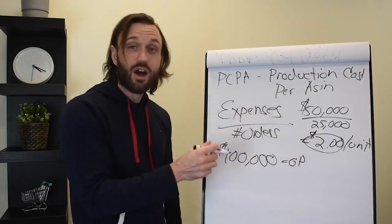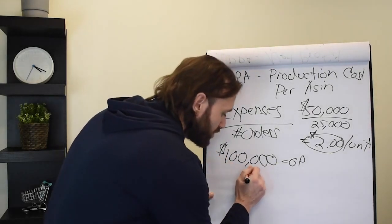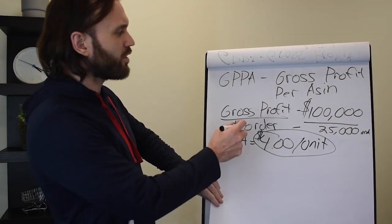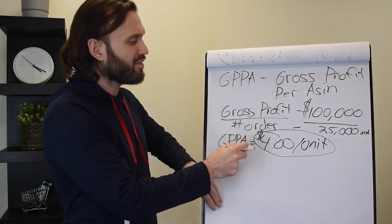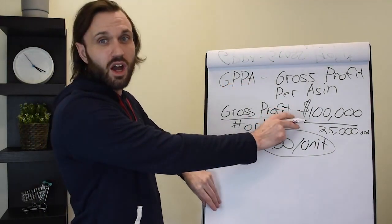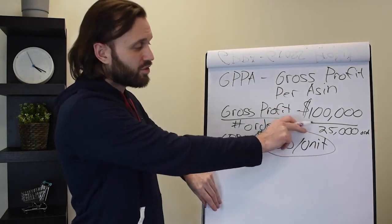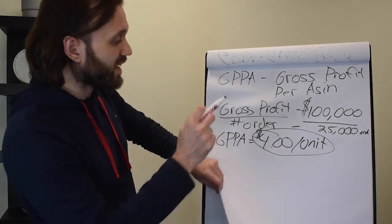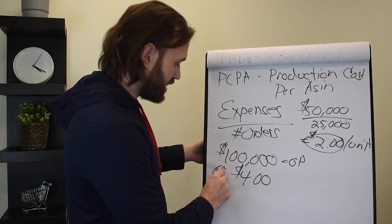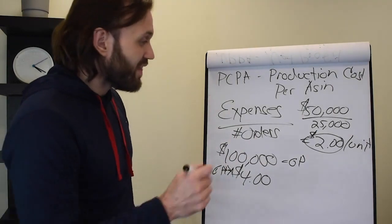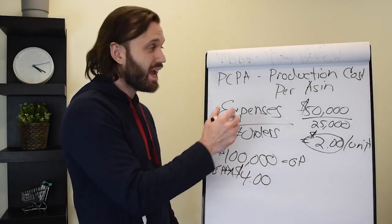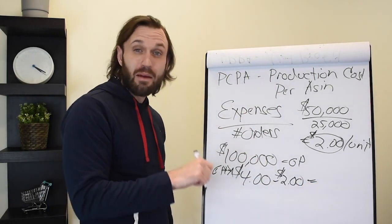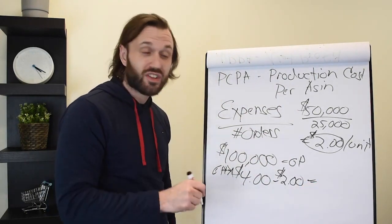Now if we take our original $4, which we pulled from our GPPA or gross profit per ASIN—$4 a unit, $100,000 in gross profits divided by 25,000 orders in 30 days—if we take that $4 per unit in GPPA and now we subtract our PCPA, which is our production cost per ASIN, we are left with, in net profits on average per sale, $2 every time we sell a product.